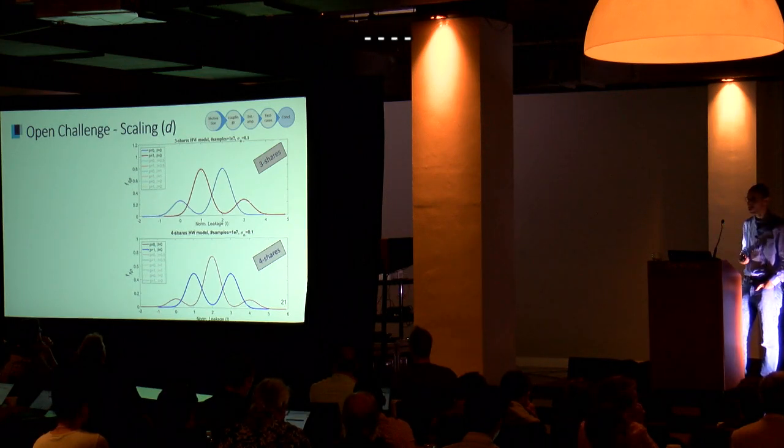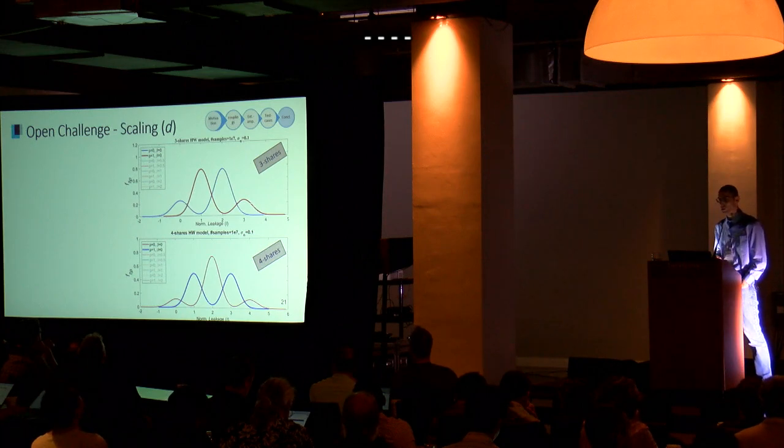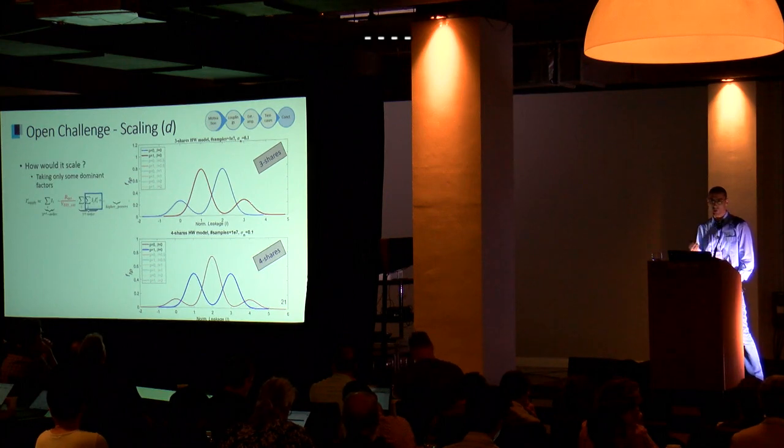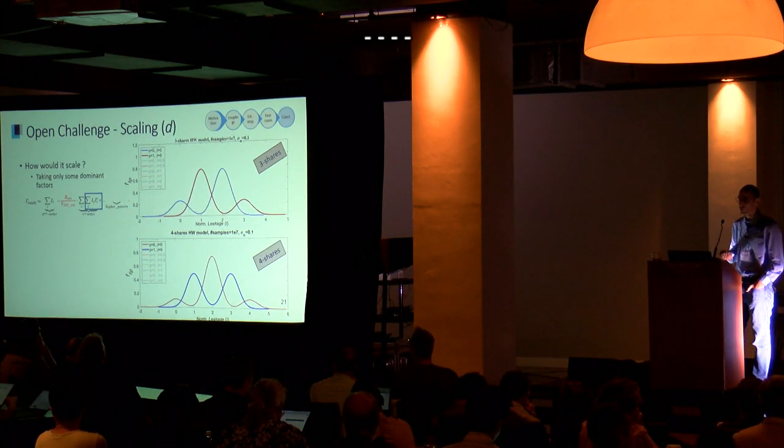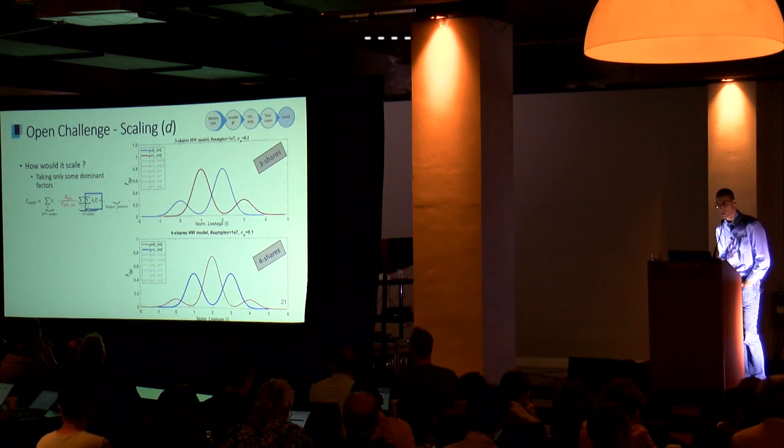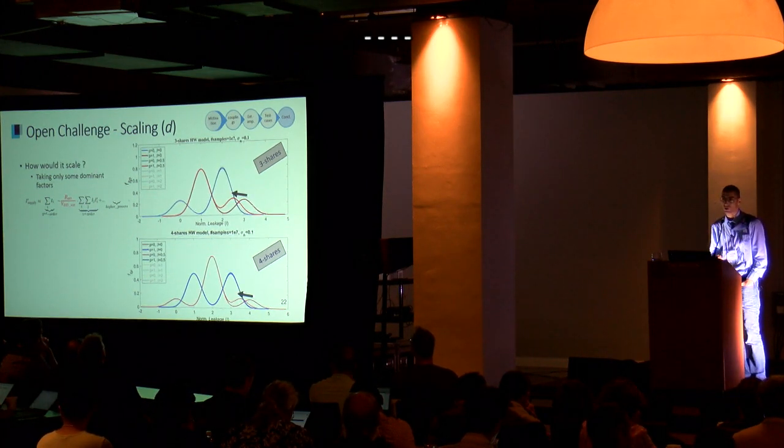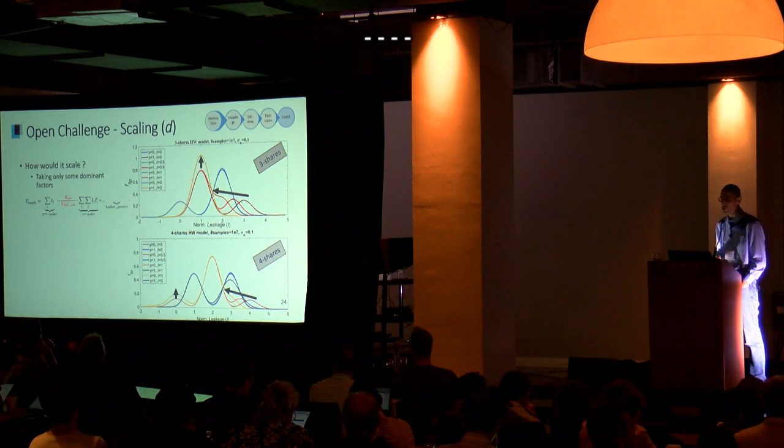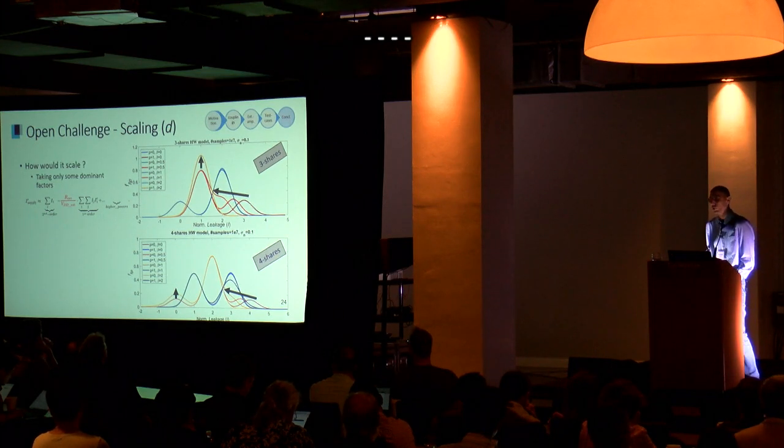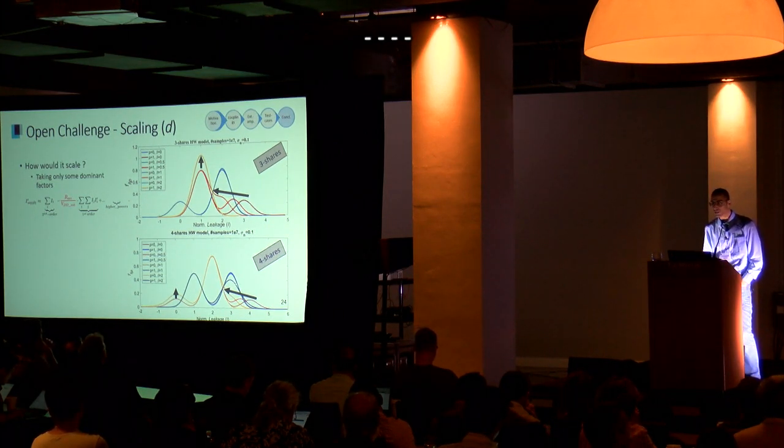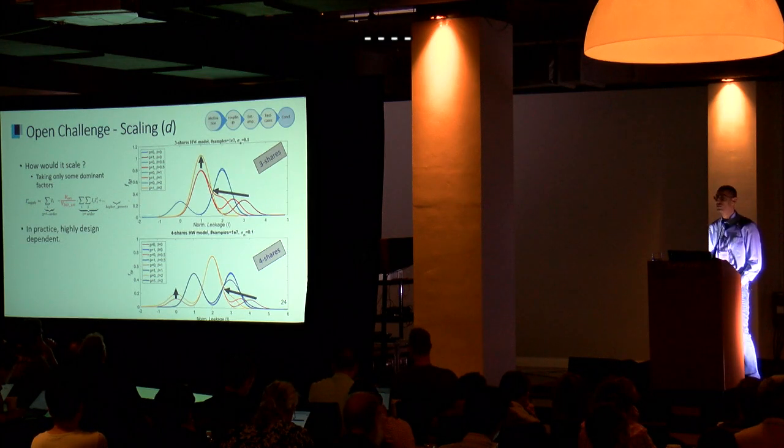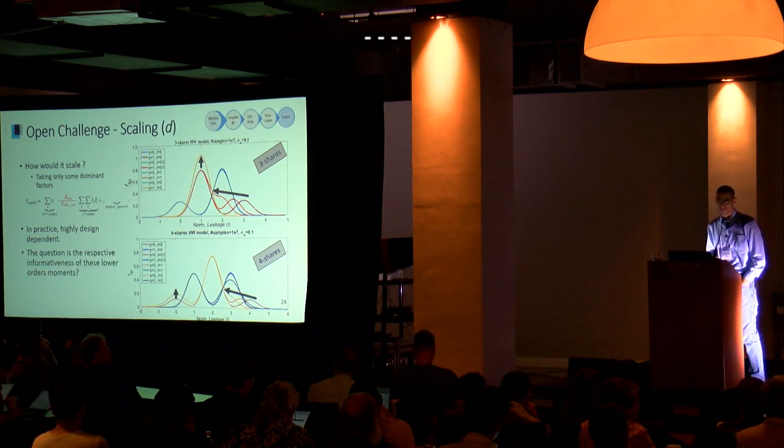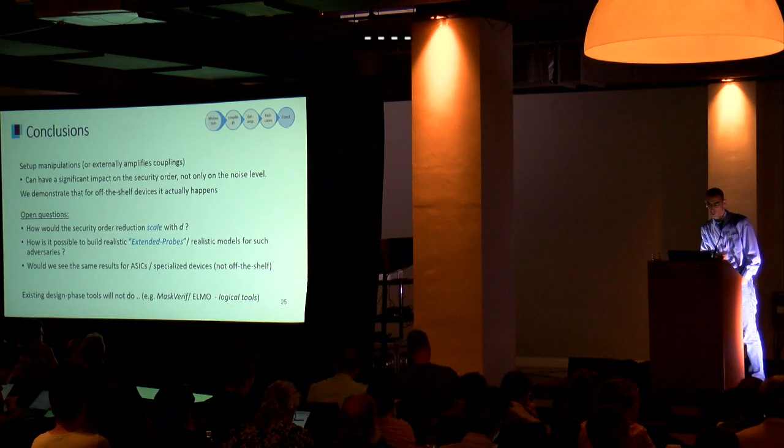We know how the distributions look like for three and four shares. We plugged that into our model with reasonable values for external amplification and looked at how it's supposed to behave. Clearly, we see some asymmetry in the distributions and can expect information to extract. The question is how significant can we make the amplitudes of these couplings.